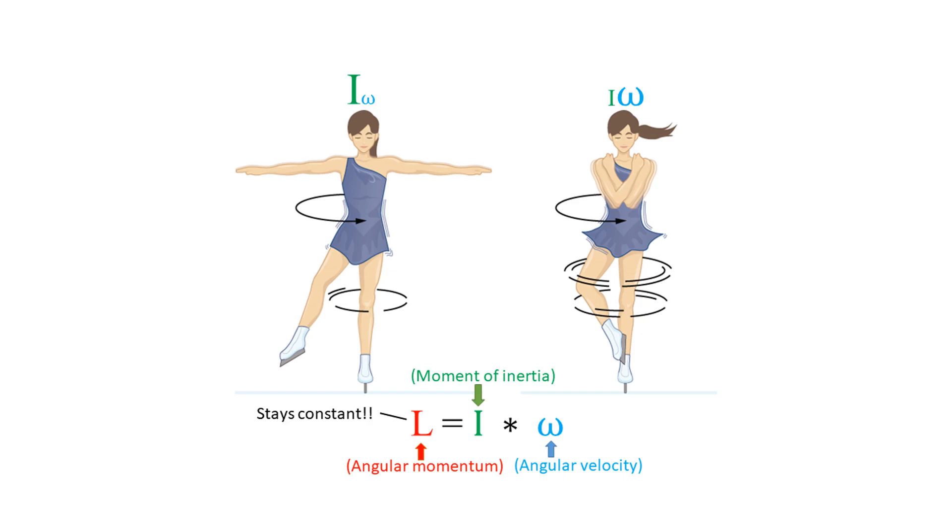However, this explanation doesn't really show why the skater speeds up. Can we find a more intuitive reason?